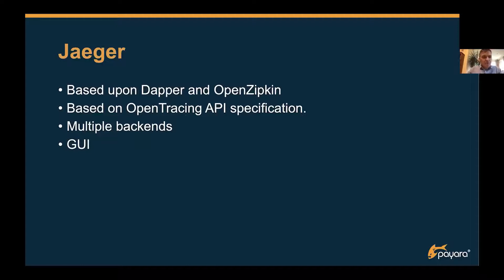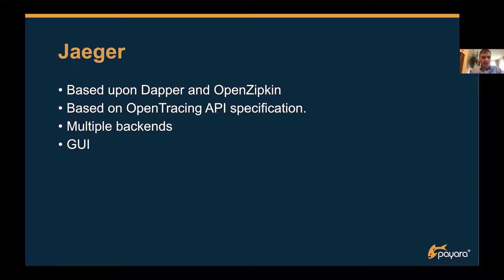Jaeger is a very well-known product also based on the open tracing specification. There is an easy way to integrate MicroProfile using the SPI available in many products to connect to Jaeger, so that all that information can be displayed in Jaeger's GUI to investigate all those spans. Jaeger also supports multiple backends — you can use an in-memory database or store it in a proper database.